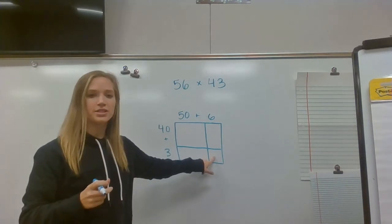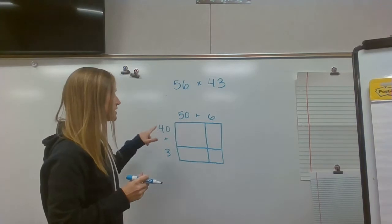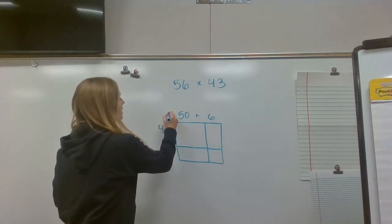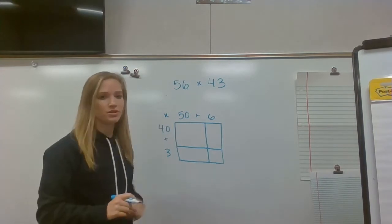Now, this is going to be our smallest number because it's the ones place by a ones place, and this one's going to be larger because it's a tens place by a tens place. And then I need to put my multiplication in the corner to remind me to multiply the numbers together.